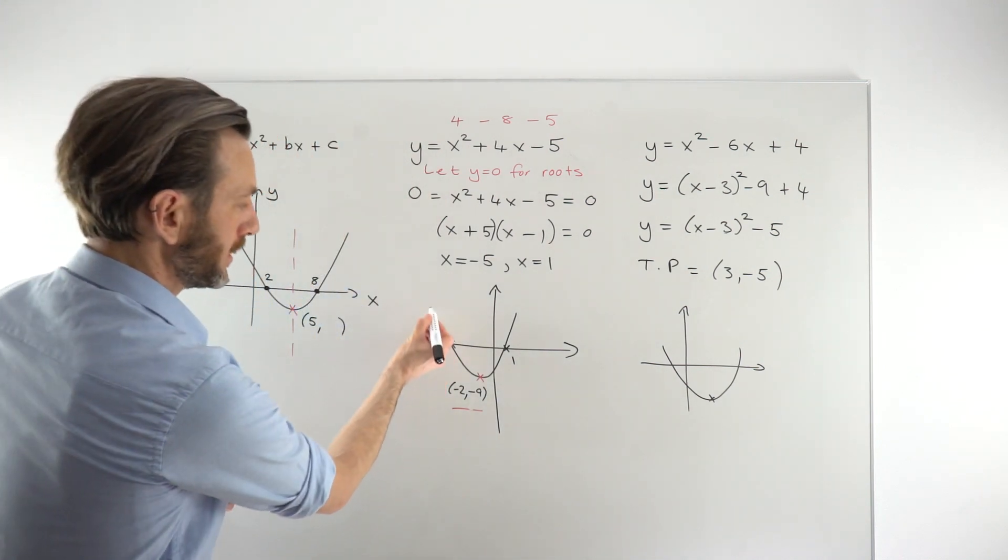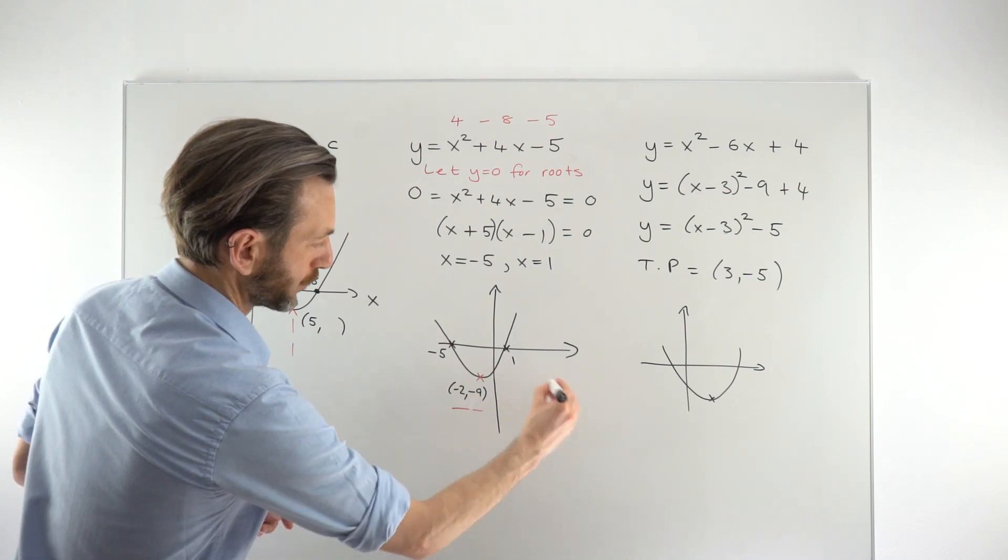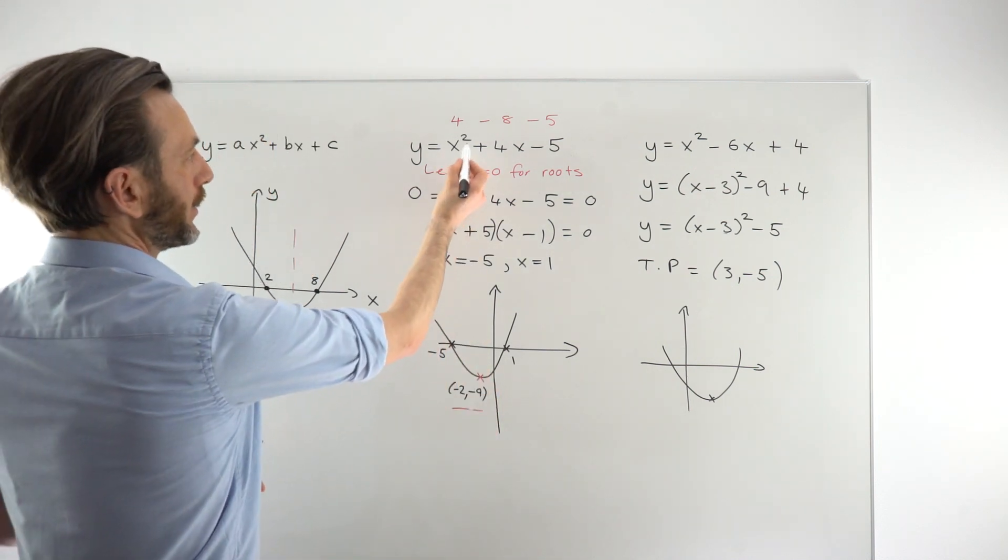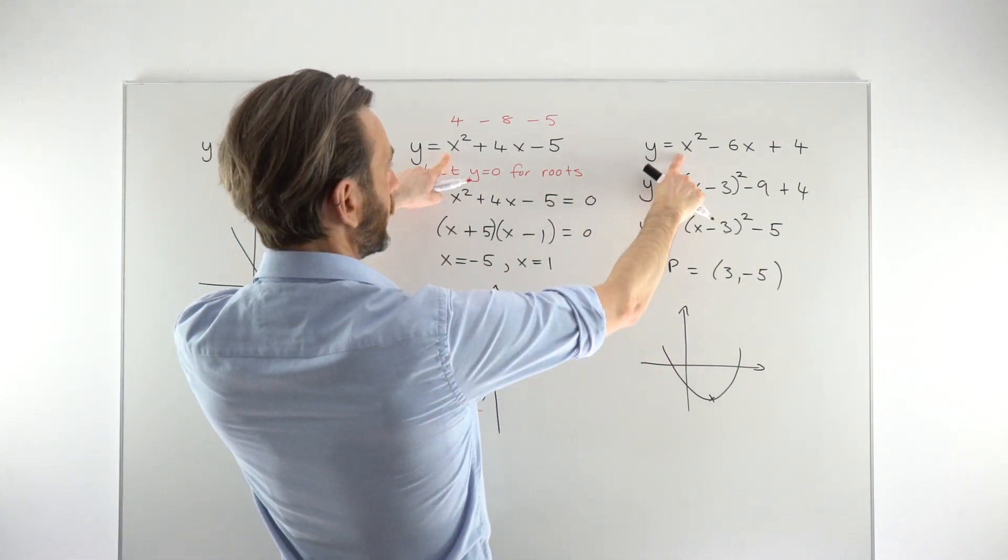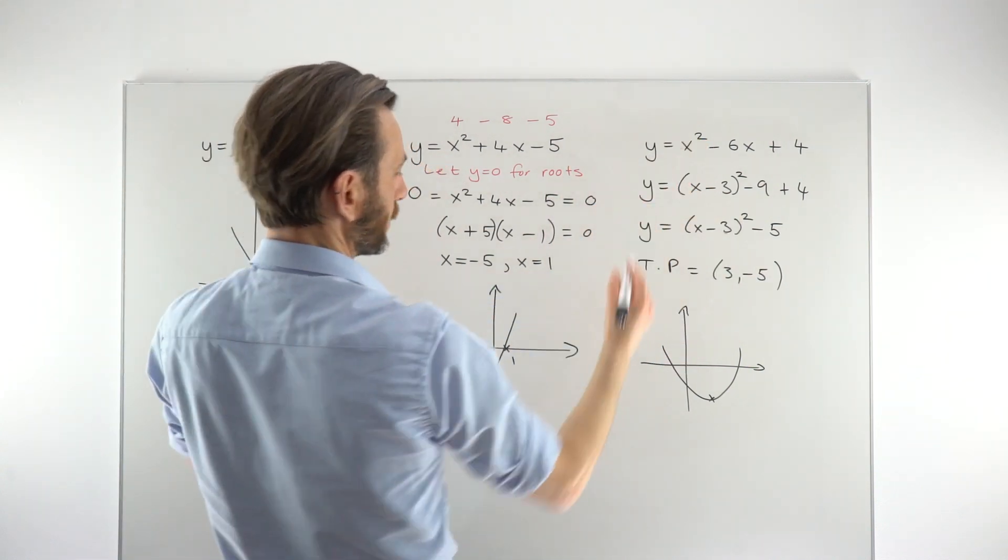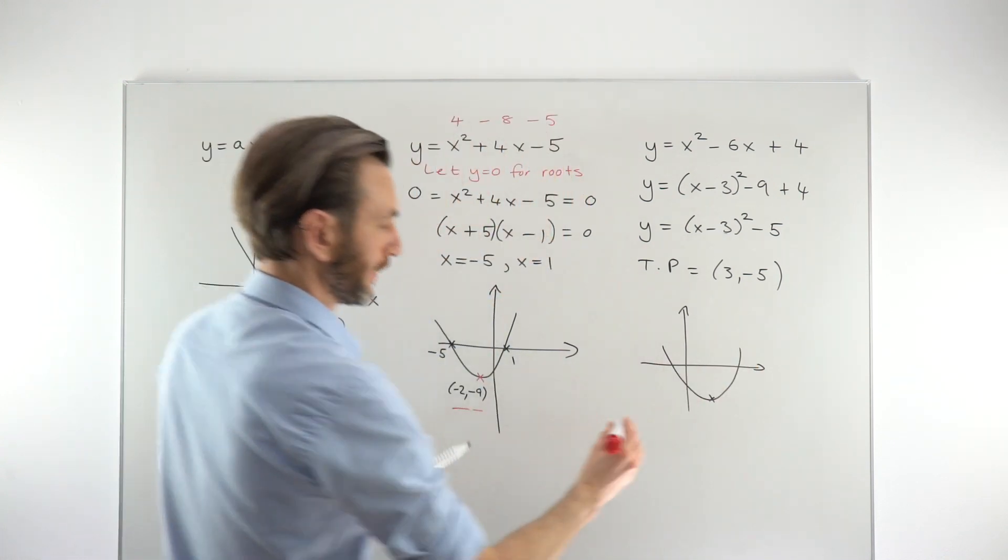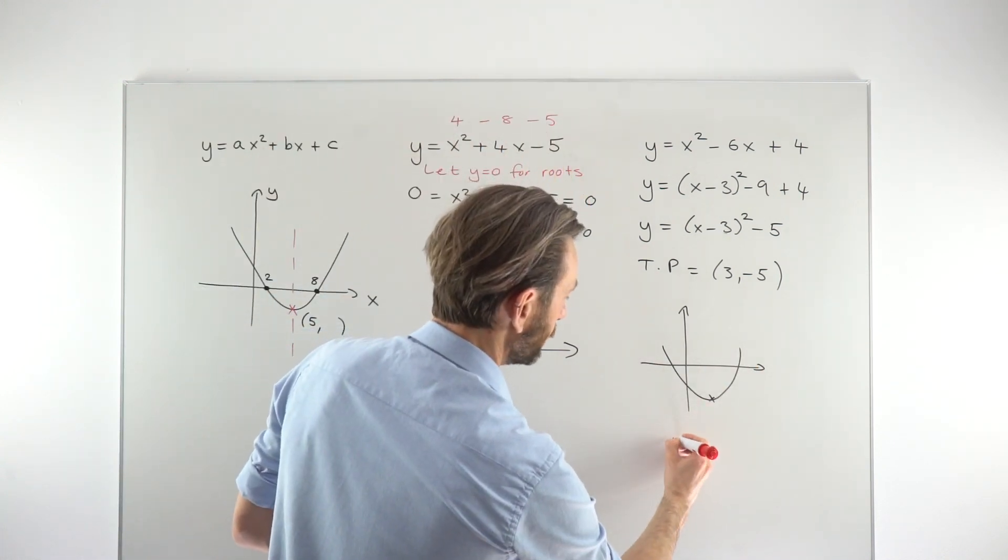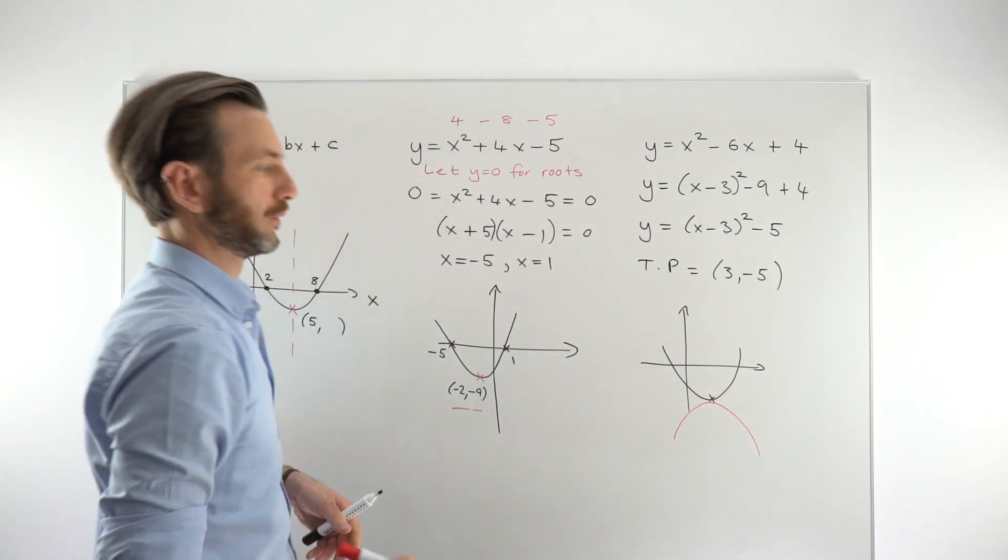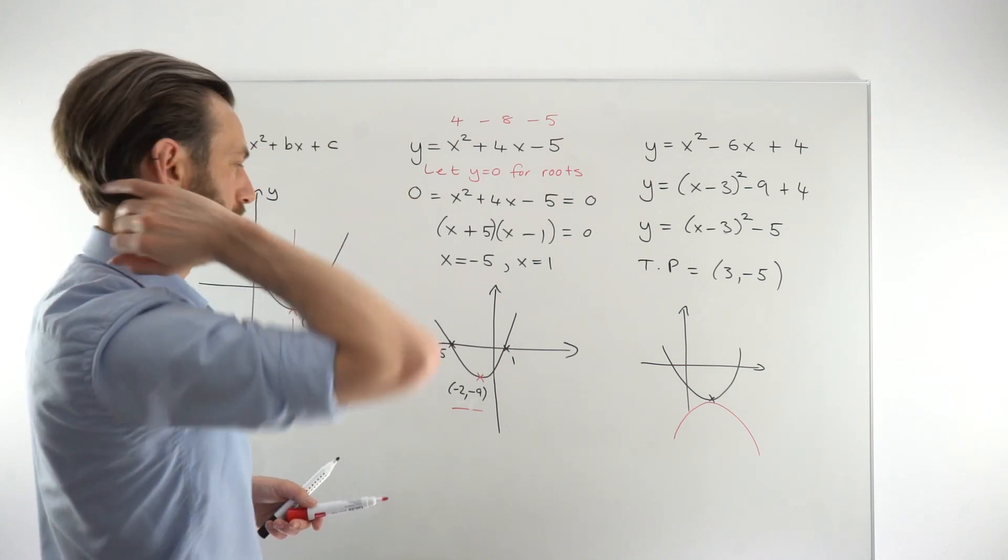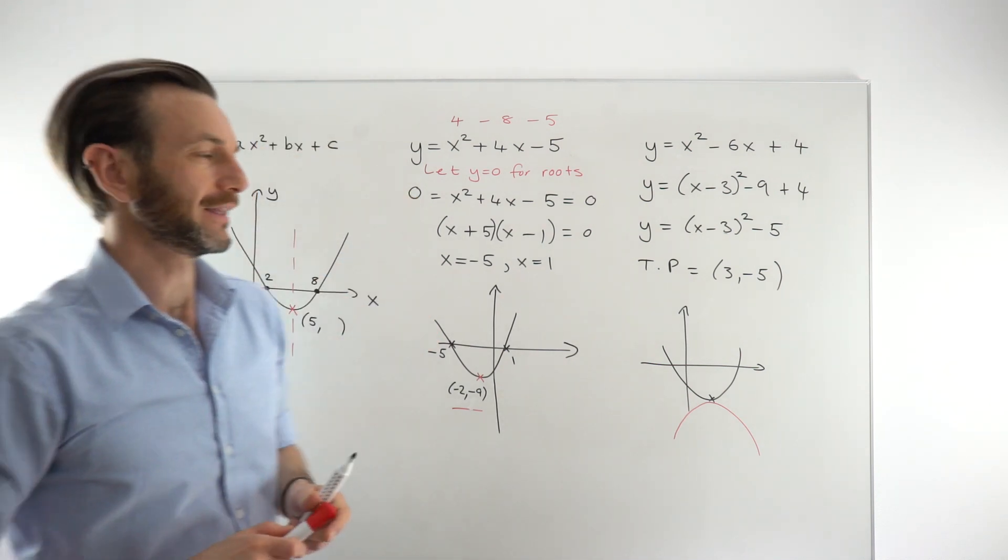Remember that you determine whether the parabola is this shape with a minimum turning point or the other way with a maximum by whether this term, the x squared term, is positive or negative. Both of these were positive because there's no negative in front. That's why I know it's turning this way. If it was a negative x squared, that could still be the turning point. And we would still get it in the same way, but it would turn down the other way to make it a maximum turning point. So those are basically your two options for finding the turning point.